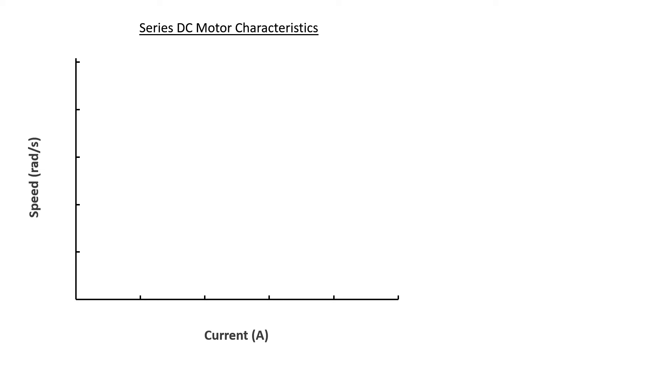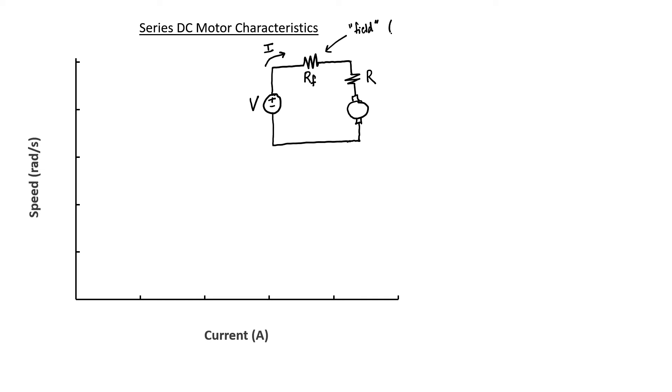Before we measure it, let's derive the relationship between speed and torque so we'll know what to expect. The speed versus torque characteristics are not linear because the magnetic flux is no longer constant — it depends on the current. Our goal is to find the relationship between speed and current in a series DC motor. We apply a constant voltage V; the source supplies current I, but unlike before we have an extra resistance in series with the motor — with subscript F for field. The torque constant is no longer constant because the magnetic field produced by the stator depends on the current, so we need a different torque constant for this motor.